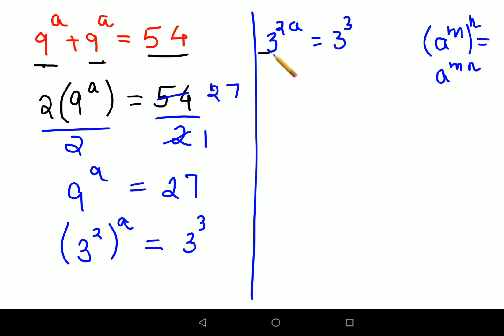Now if you look closely the bases are the same. So I can directly say 2a equals to 3. Now in order to find the value of a I am going to divide both sides by 2. So this is cancelling.